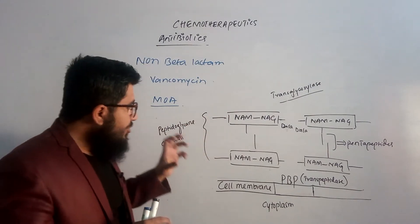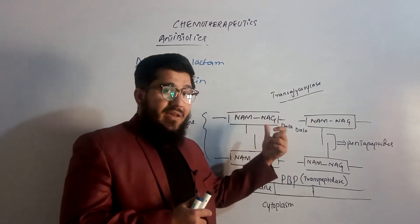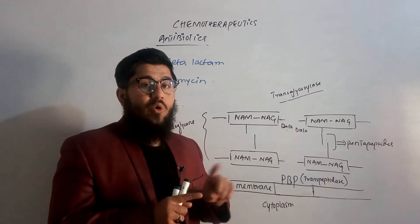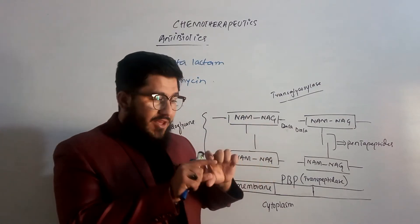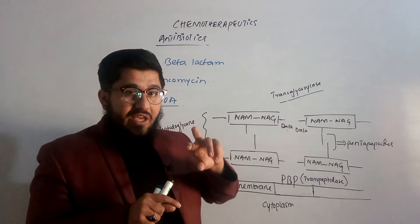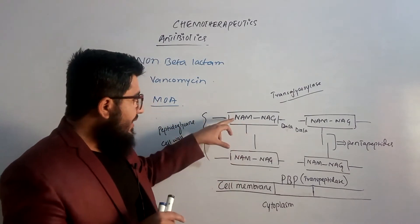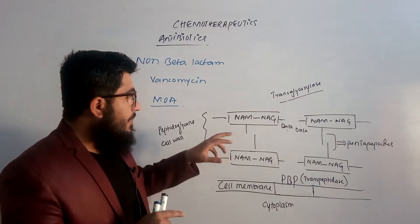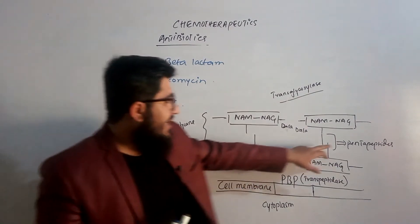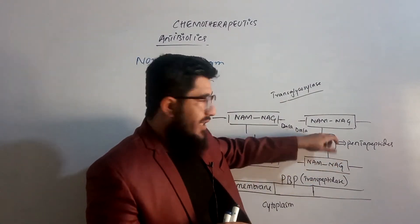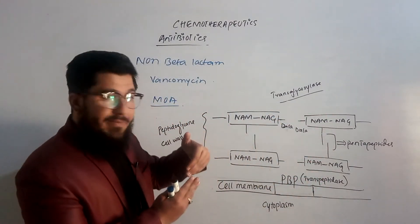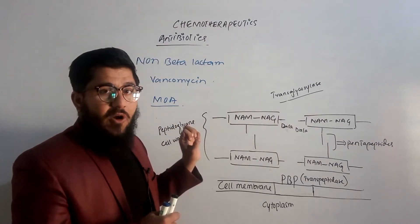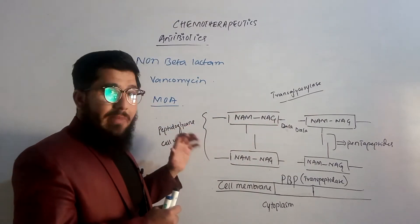The peptidoglycan cell wall is made up of NAM/NAG components — N-acetylmuramic acid and N-acetylglucosamine. These units combine together to form a chain. There are actually two chains available, one on the upper side and one on the lower side. These two chains are then further linked by the pentapeptides — one pentapeptide from the upper chain and one from the lower chain — and these two pentapeptides cross-link together to form the peptidoglycan cell wall.